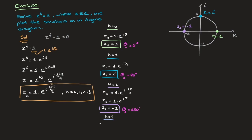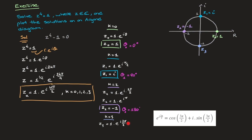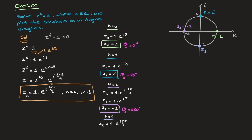When k equals 3, the expression becomes z sub 3 equals 1 times e to the i·3π over 2. This root lies on the unit circle with argument 3π/2, corresponding to 270 degrees, which is at the bottom of the unit circle. Checking: e to the i·3π/2 equals cosine of 3π/2, which is 0, plus i·sine of 3π/2, which is negative i. So z sub 3 equals negative i. The argument is theta sub 3 equals 270 degrees.